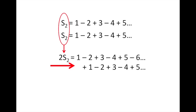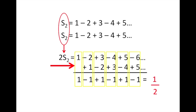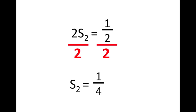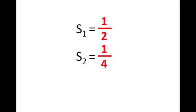We add these together: 1 plus nothing is 1, minus 2 plus 1 is negative 1, 3 minus 2 is 1, and so on for the rest. Once we get our answer, 2S2 is equal to one half. We take 2 off of both sides and we get S2 is equal to one fourth. So these are our two equations that we have solved for so far: S1 is equal to a half and S2 is equal to one quarter.